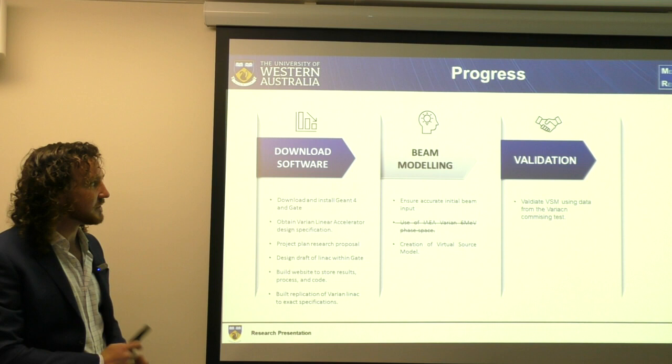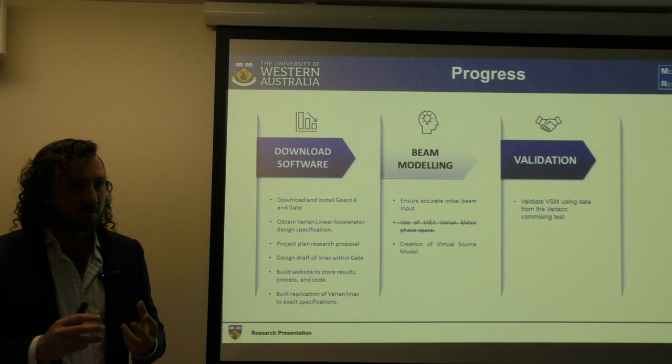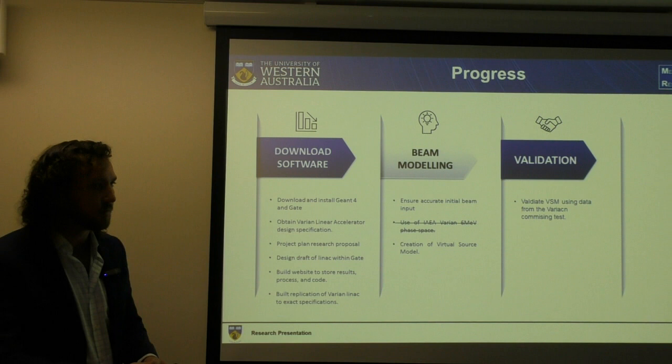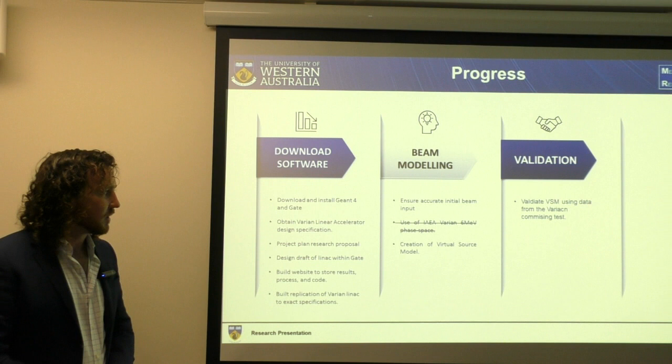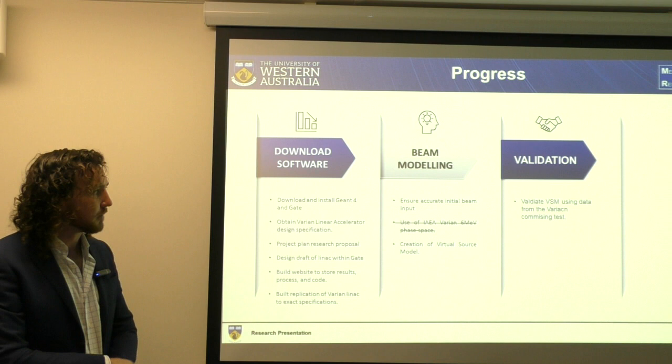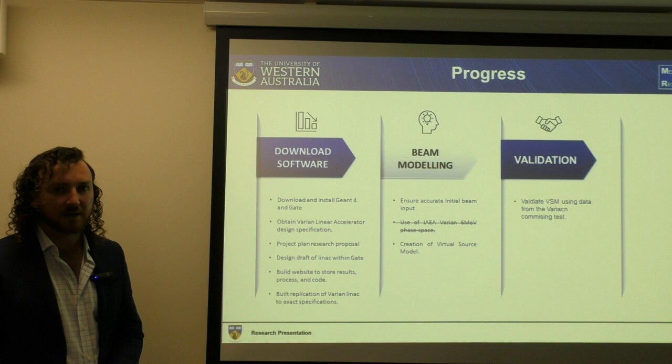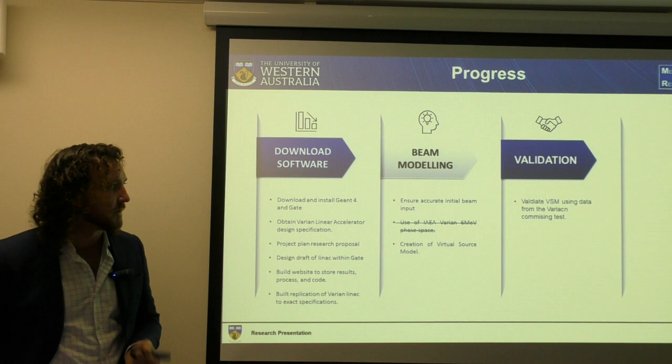The software components are all completed. The next stage is to model the beam, which is a critical aspect because we're defining what the source of charged particles is going to be. If we get this wrong, anything that flows from it would be erroneous. We're going to be creating a virtual source model for that, and we've got the groundwork in place. Once the beam model is up and running correctly, the next stage is to validate the results using data from the Varian commissioning report.